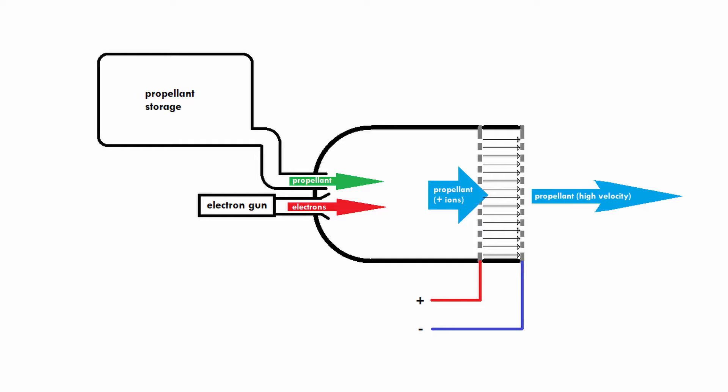At this point, you might be wondering: why do we need to ionize the gas in the first place? Why don't we just accelerate the neutral gas molecules with the electric field? Well, that's because an electric field only applies a force to a charged object. In this case, because we have positive ions, we have the negative electrode at the back of the spacecraft so that the positive ions move towards the back.